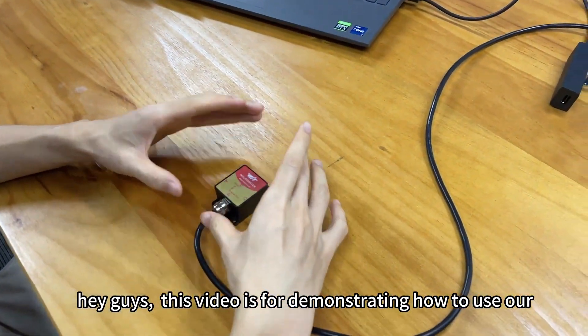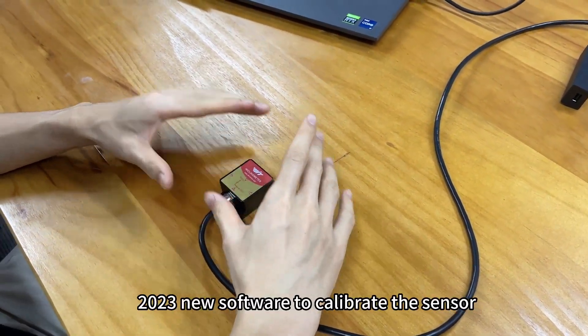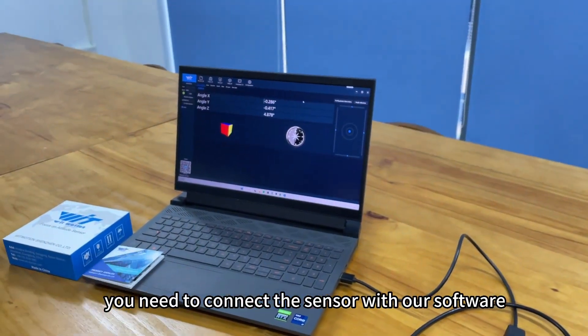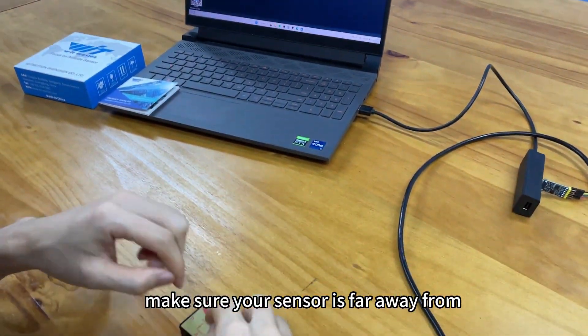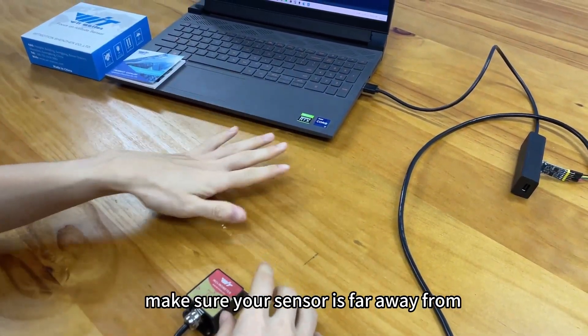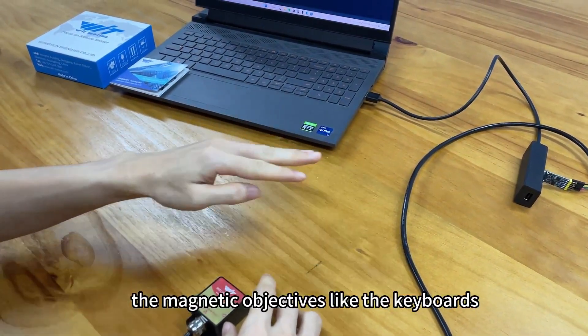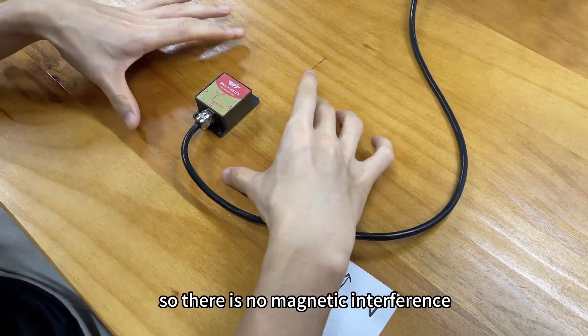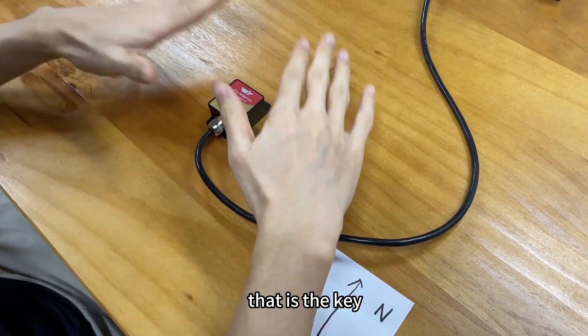Hey guys, this video is for demonstrating how to use our 2023 new software to calibrate the sensor. Firstly, you need to connect the sensor with our software and then make sure your sensor is far away from magnetic objects like keyboards, speakers, and mobile phones. Our desk is made of wood, so there is no magnetic interference.